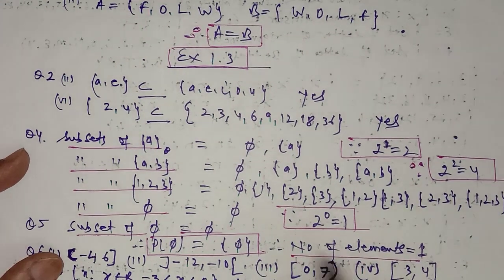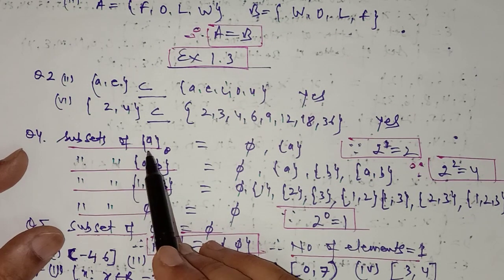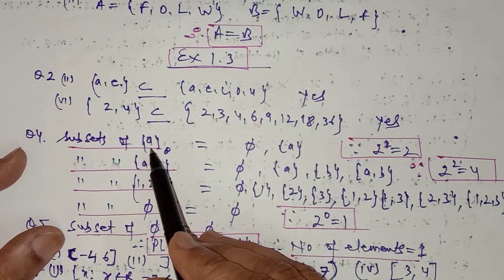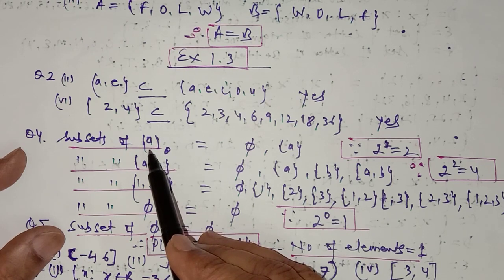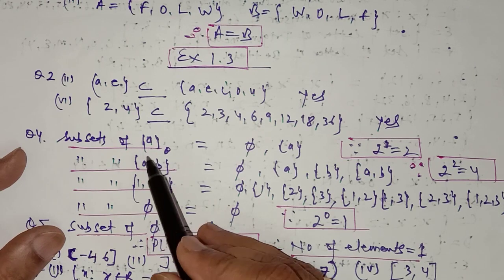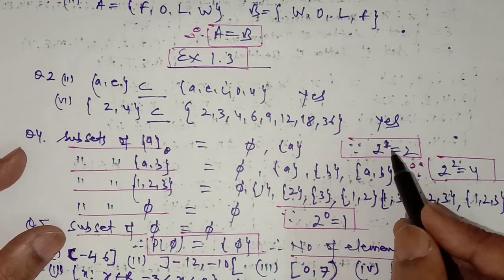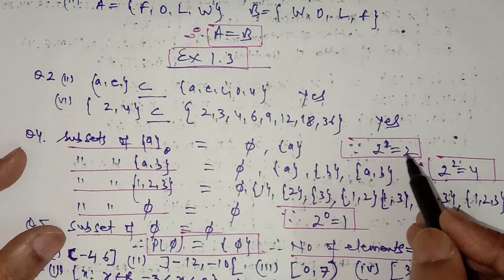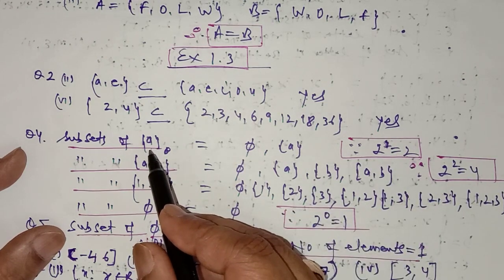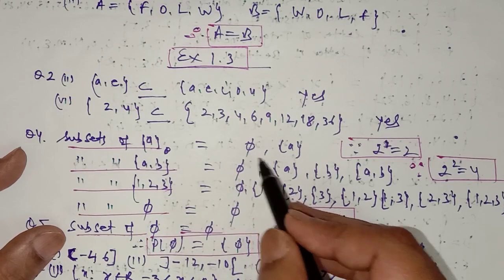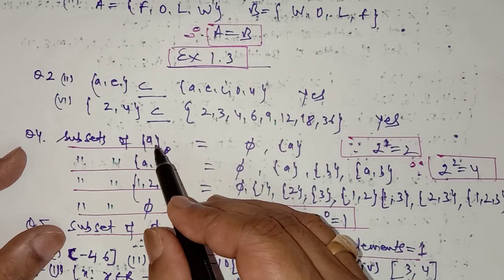In question number 4, you have to find the subsets of the given sets. We have to find the subset of a set containing only one element. The number of subsets of a set is 2 raised to power n, where n is the number of elements. So for one element, 2 raised to power 1 equals 2. We have only two subsets: the empty set, and the set containing element 'a' only.